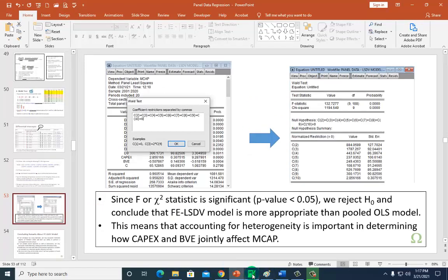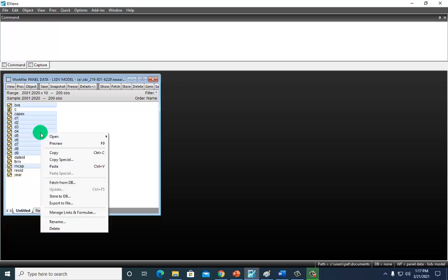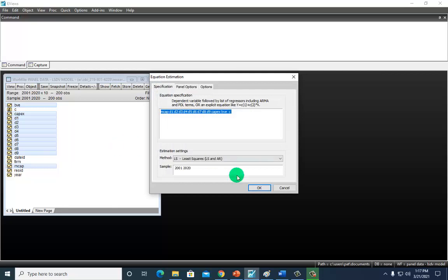Let's go ahead and show it right here on eViews. I've already highlighted my variables, and all I've got to do is right-click on any of them and open as equation. And that's it.